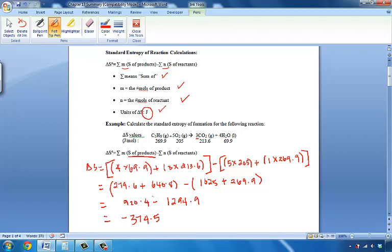And, of course, we know that entropy is always in joule units, and we've accounted for the moles. So, the delta S standard, or the standard entropy of this reaction is negative 374.5 joules, which means that this entropy has decreased.